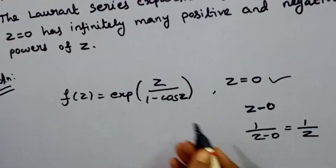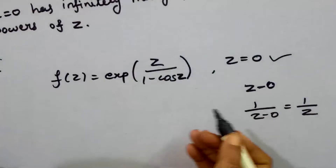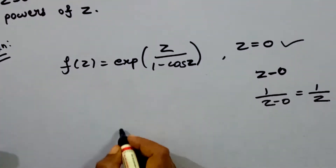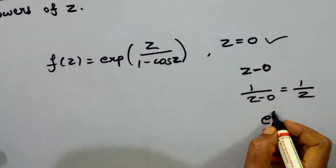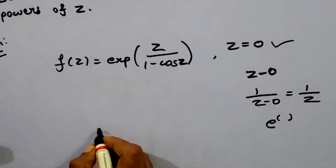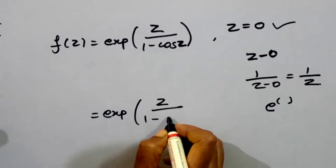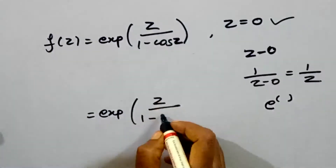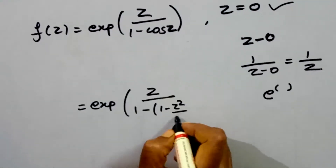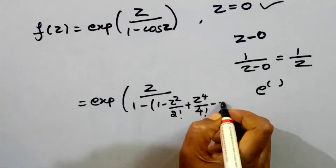Now let's expand the given function in the Laurent series. We expand the exponential e to the power z, and we expand the denominator 1 minus cos z. Recall that cos z equals 1 minus z squared over 2 factorial plus z to the power 4 over 4 factorial minus and so on. So 1 minus cos z equals z squared over 2 factorial minus z to the power 4 over 4 factorial plus and so on.